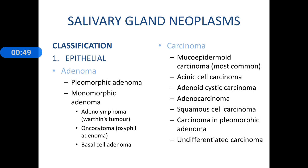Under carcinomas we have mucoepidermoid carcinoma, which is the most common carcinoma affecting the salivary gland. We also have acinic cell carcinoma, adenoid cystic carcinoma, adenocarcinoma, squamous cell carcinoma, carcinoma in pleomorphic adenoma, and undifferentiated carcinoma.